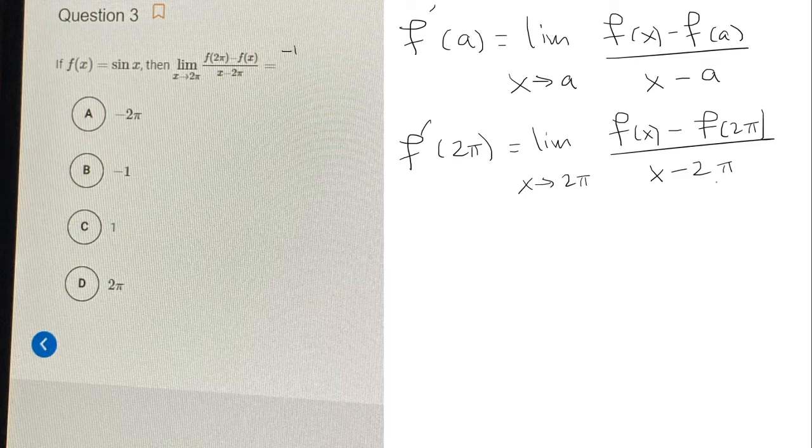And in the denominator, they're both x minus 2 pi. So if I multiply the top by a negative 1, it becomes f of x minus f of 2 pi over x minus 2 pi. And this negative 1, we're just going to bring it out in front of the limit.